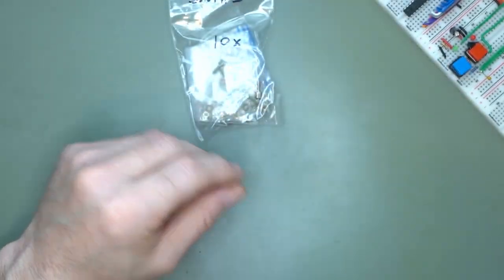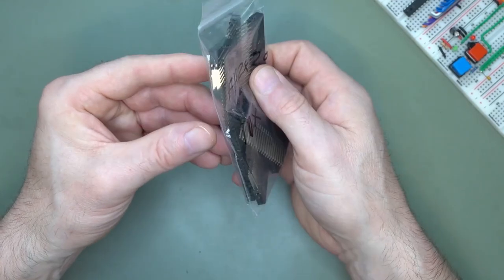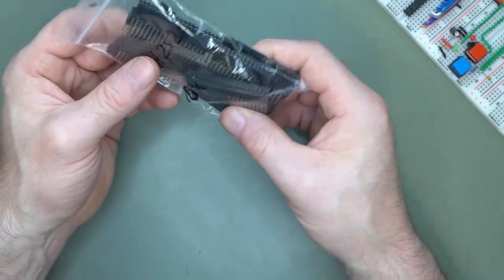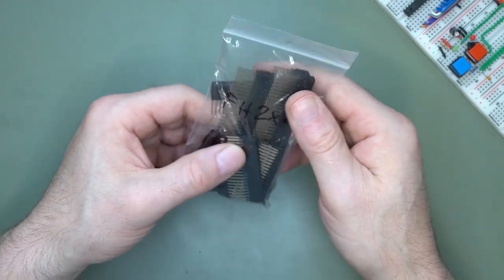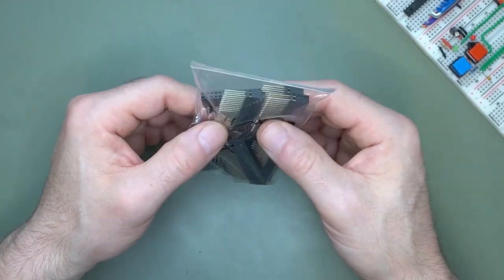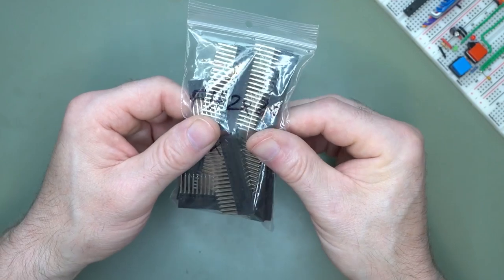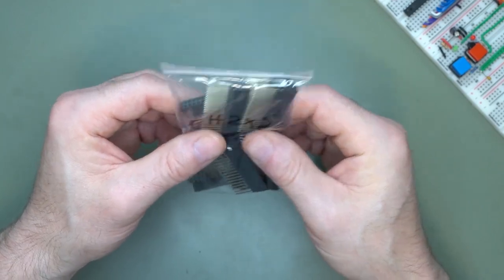I have some stackable headers, 40-pin, 2 by 20, got 10 of them. It's always practical to have when you're doing a stackable version of a system. If you look at episode zero, you'll see my stack version of my 6502 system, my second revision.